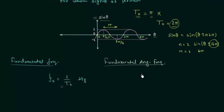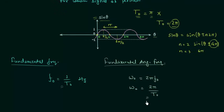Sometimes you have to calculate the fundamental angular frequency. It is denoted by ω0 and equals 2π·F0. Since F0 = 1/T0, the fundamental angular frequency is ω0 = 2π/T0. The unit of fundamental angular frequency is radians per second. Once we have the fundamental period T0, we can easily calculate both F0 and ω0.